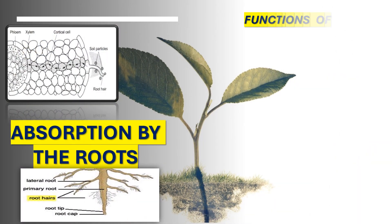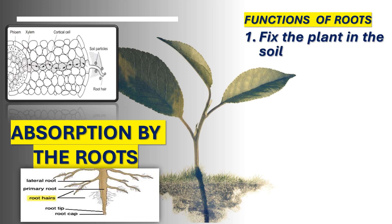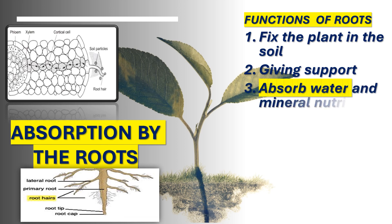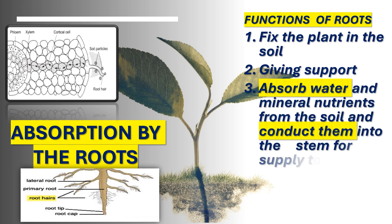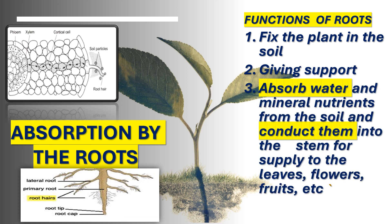What are the major functions of the roots? First, they fix the plant in the soil, giving support to the plant. Second, they absorb water and mineral nutrients from the soil and conduct them into the stem for supply to the leaves, flowers, fruits, and so on. These are the major functions of the roots.